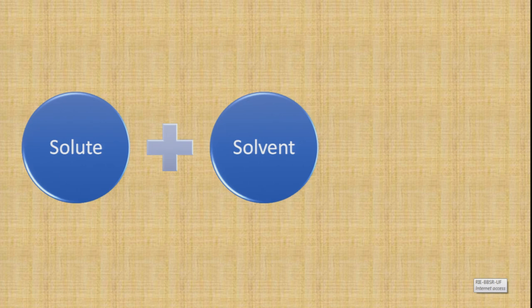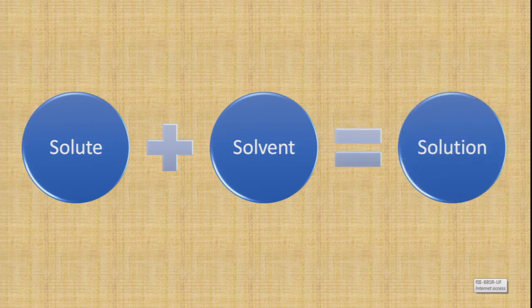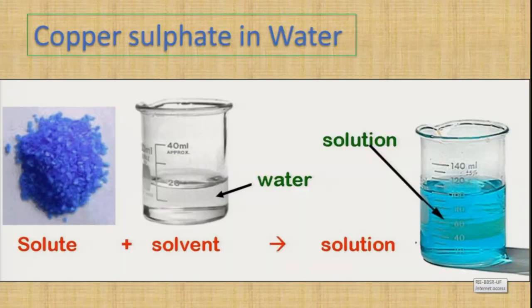We were discussing one such type of homogeneous mixture — the true solution. A true solution has two components: solute and solvent, which together give rise to a solution. Depending on the physical state of solute and solvent, we can have varieties of solutions. For example, copper sulphate dissolved in water gives copper sulphate solution, where copper sulphate is the solute and water is the solvent.